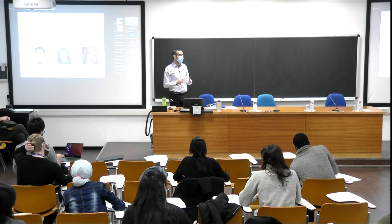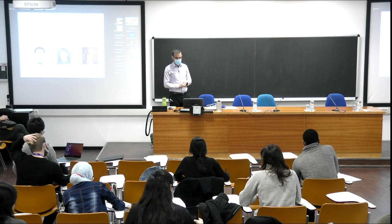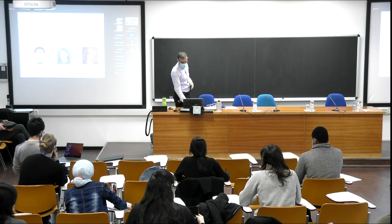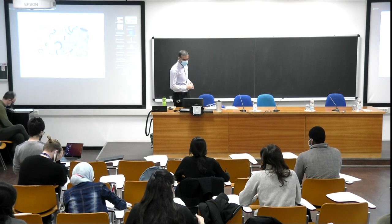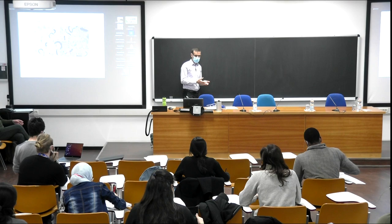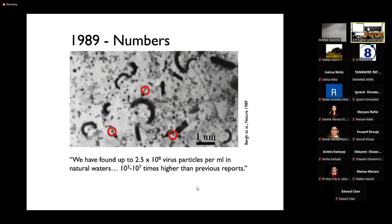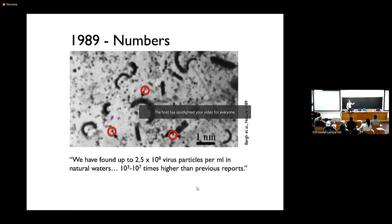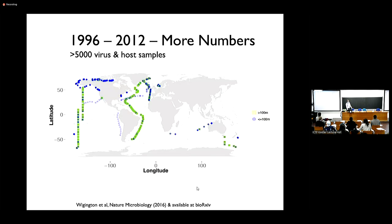Today I'll begin to think more broadly about complex networks of phage and bacteria. I want to re-emphasize that there are a lot of viruses in natural systems. This illustration from 1989 by Berg showed 250 million viruses per milliliter; typically it's something more like 10 million per milliliter. Just because we can find resistance in the laboratory doesn't mean these viruses can't make it in natural environments.